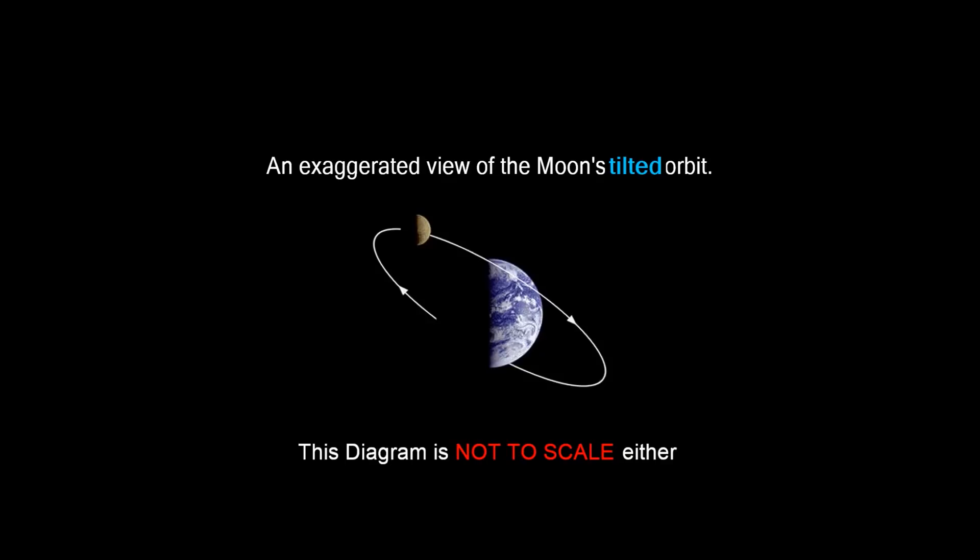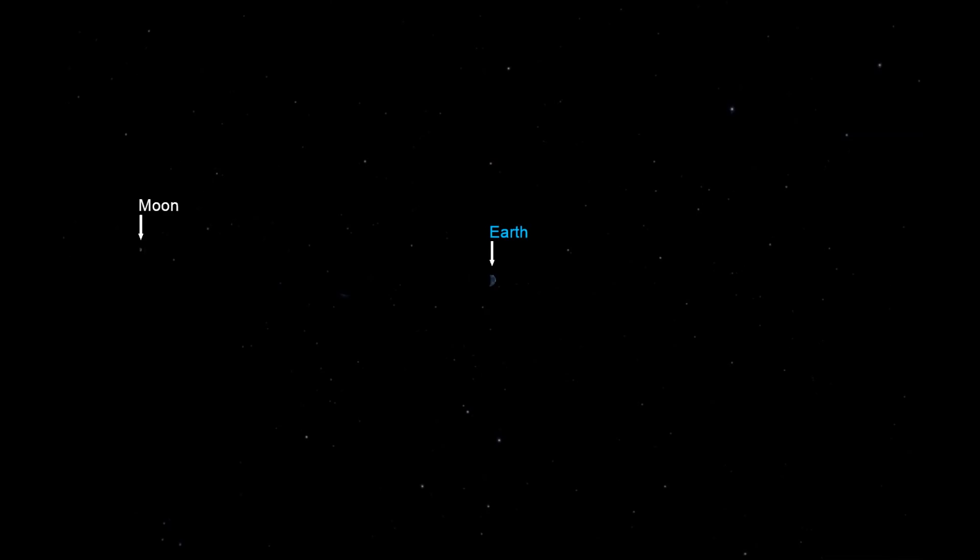In reality, the path of the moon's orbit is tilted just a tiny bit. This not-to-scale picture shows an exaggerated view of what we mean by a tilted orbit. Let's now go to a correctly scaled model of the solar system.